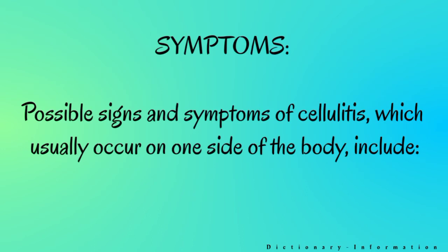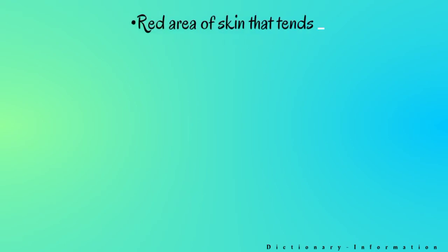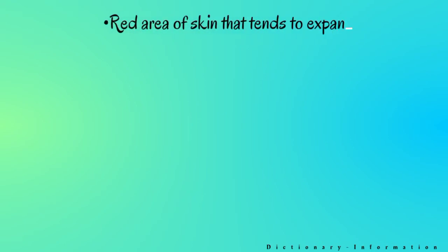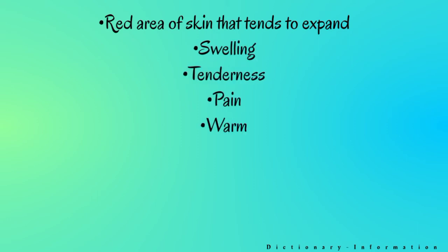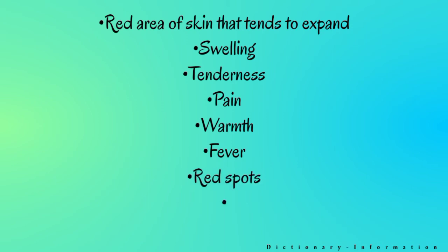Possible signs and symptoms of cellulitis, which usually occur on one side of the body, include: red area of skin that tends to expand, swelling, tenderness, pain, warmth, fever, red spots, blisters, and skin dimpling.